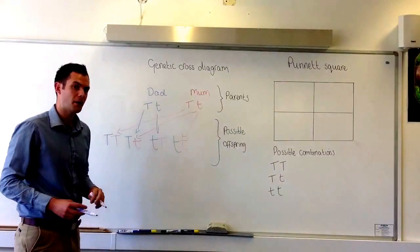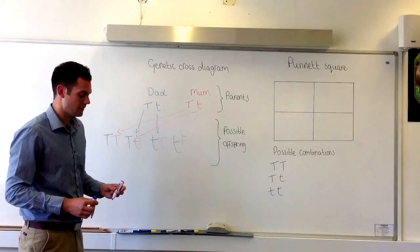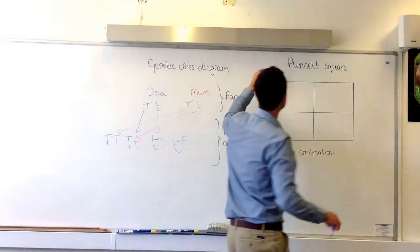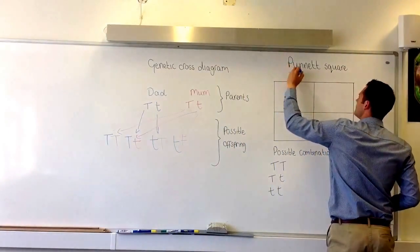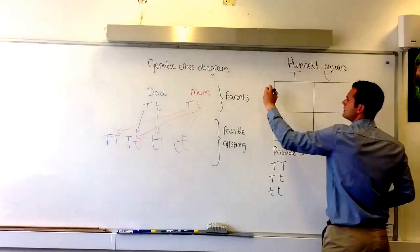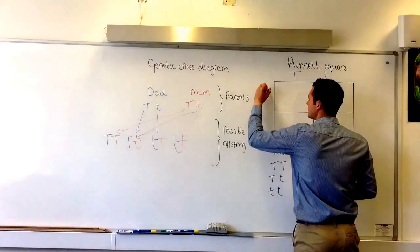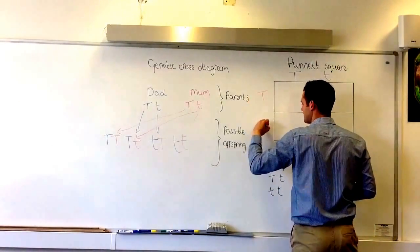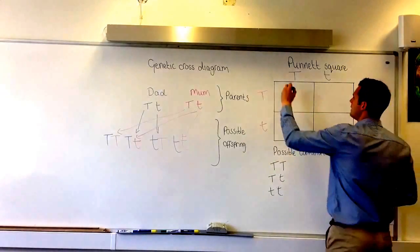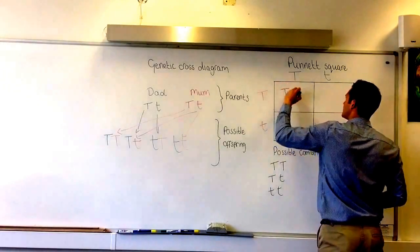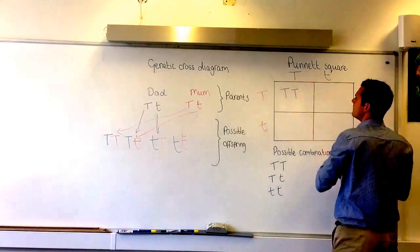How would that look on a Punnett square just before we calculate the probability? Here we have a dominant T and a recessive t, and here a dominant T and a recessive t. When we complete the Punnett square we see we have exactly the same information.